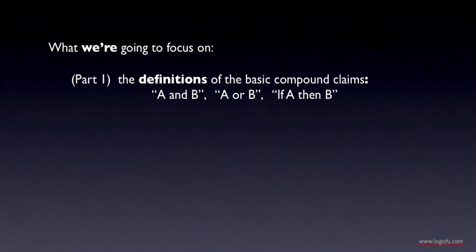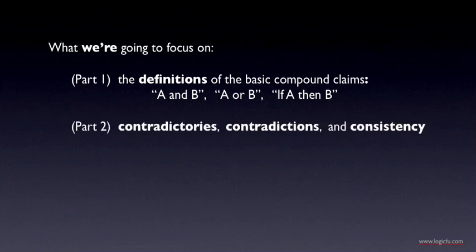In part one, we're going to look at the definitions of the basic compound claims. What is a conjunction? What is a disjunction? What is a conditional? In part two, we'll look at the definition of the contradictory of a claim and use this to define a set of related logical concepts, contradiction and consistency. These are very important concepts in logic and argument analysis.